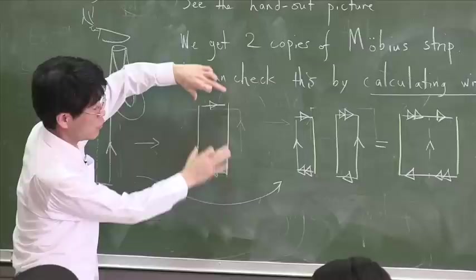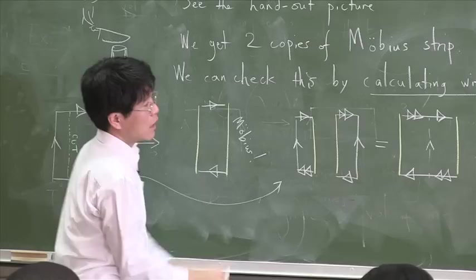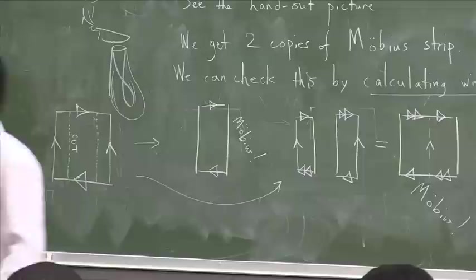But, what is this? Look. That, if you look at this strip, I have to identify the edges like this. That's a Möbius strip. How about this? This side should be identified with this side. Another Möbius strip.